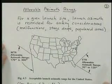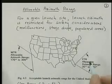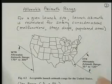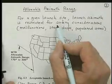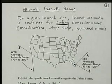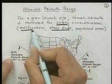Let's now consider allowable azimuth range. For a given launch site such as Cape Canaveral, the launch azimuth is restricted for safety. We have to avoid having the vehicle travel over populated areas because there will be stage drops and there could be malfunctions.